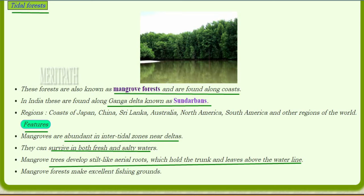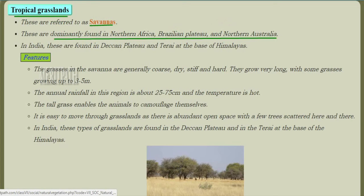Tidal forests, also known as mangrove forests, are found around coastal regions. In India they are found along the Ganga Delta, known as the Sundarbans. They are also found in coastal regions of Japan, China, Sri Lanka, Australia, North America, and South America. These forests are abundant in intertidal zones near deltas, survive in both fresh and salt water, and the mangrove trees develop aerial roots which hold the trunk and leaves above water. They also make excellent fishing grounds.